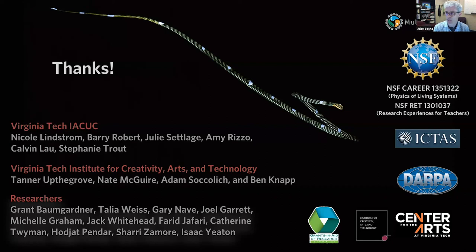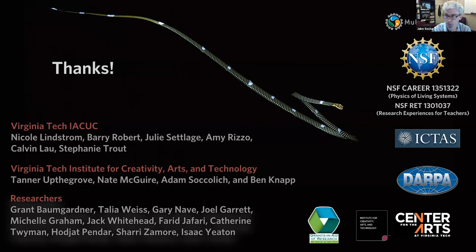How do the snakes extend their ribs? We know they use muscles attached from the vertebra to the rib — when those muscles pull, they move the ribs outward. We don't know exactly how it all works, but it's like a pulley system: if you attach a rope to a pole and pull, the pole can move back and forth.